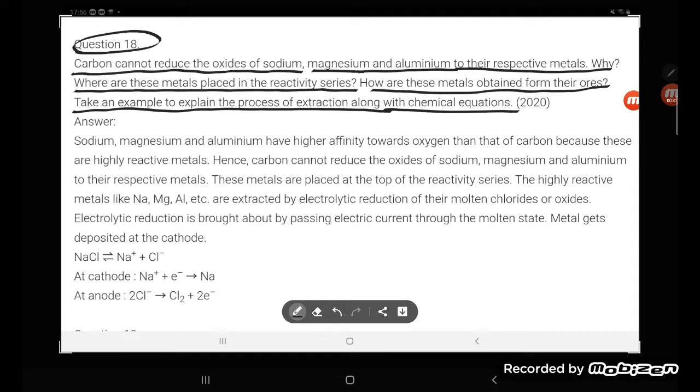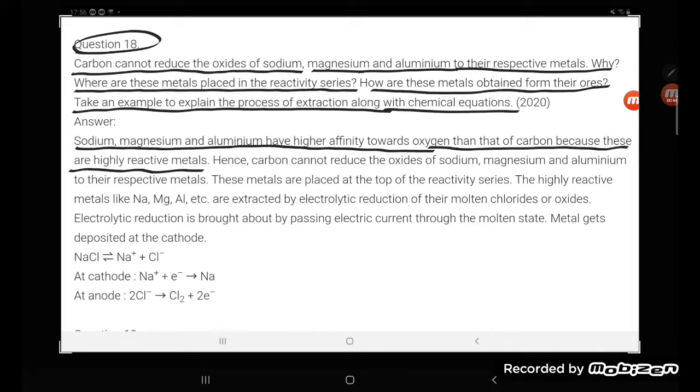They are highly reactive metals, students. So they can be extracted by electrolysis. Sodium, magnesium, and aluminium have higher affinity towards oxygen than that of carbon because these are highly reactive metals.